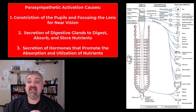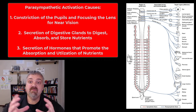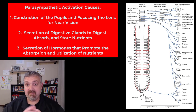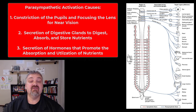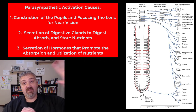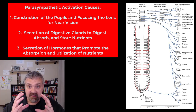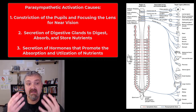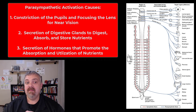Let's look specifically at what happens with parasympathetic activation — the major effects. Number one, you see the eye at the top: that would be constriction of the pupil. You're not looking for predators or prey off in the distance, so you're going to be focusing on near vision. In the modern world, maybe you're watching TV, reading a book or the paper. So that's constriction of the pupils.